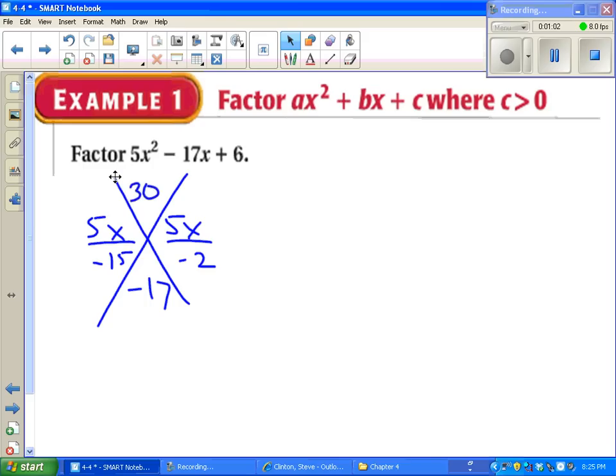One other thing we didn't have to do in the last lesson was reduce because nothing ever reduced. This time we do have to reduce. This guy reduces to x over negative 5. The other fraction does not. Once we've reduced, we can write our answer. x minus 5, 5x minus 2. Done.